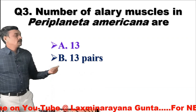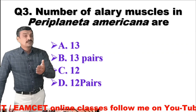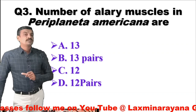Next question: number of alary muscles in Periplaneta americana — the correct answer is 12 pairs. The 13th chamber of the heart does not have alary muscles; all remaining chambers have them. Thank you very much. For more videos, follow me on YouTube by typing Laxminarayana.